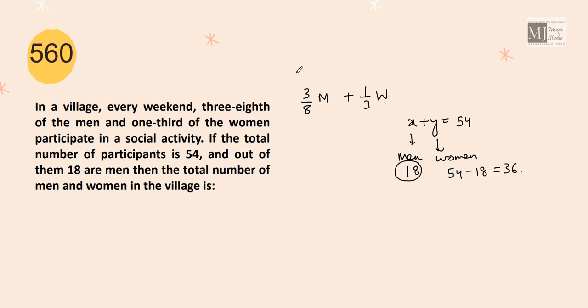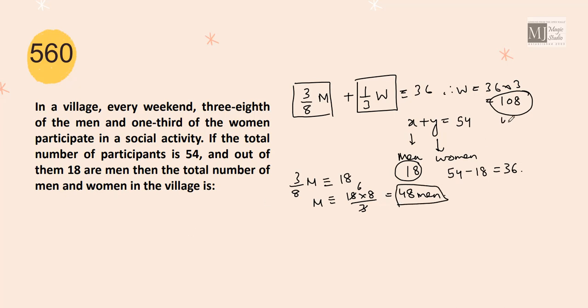So 18 men participate. That equals to three-eighths of the total men in the village. So three-eighths of the total men is equals to 18. So how many men would be there? 18 into 8 by 3, that is 48 men. And now, 36 women participate which equals to one-third of the total women of the village. So one-third is equals to 36. Therefore, total number of women in village is 36 into 3, that is 108. So we have 48 men and 108 women.